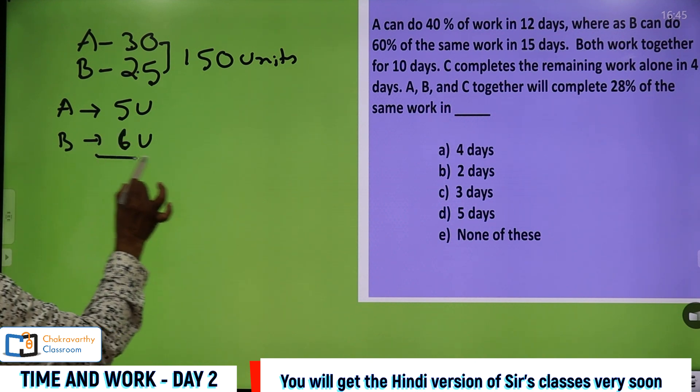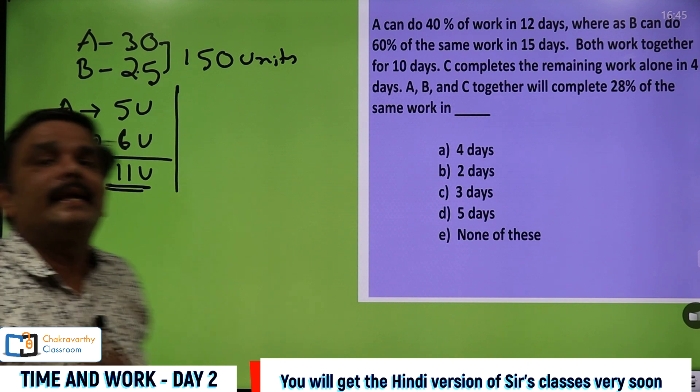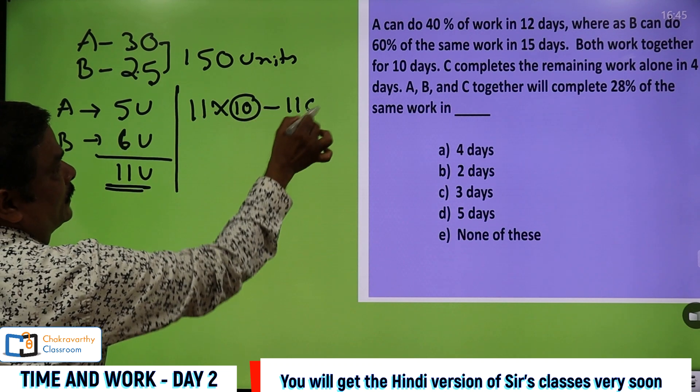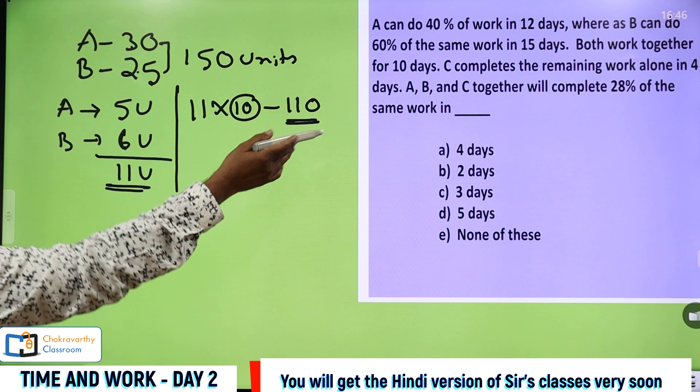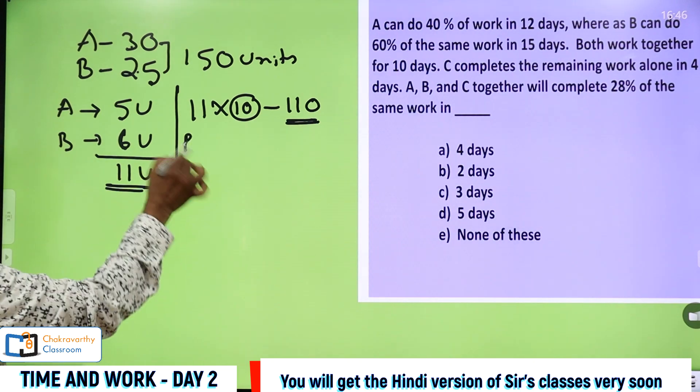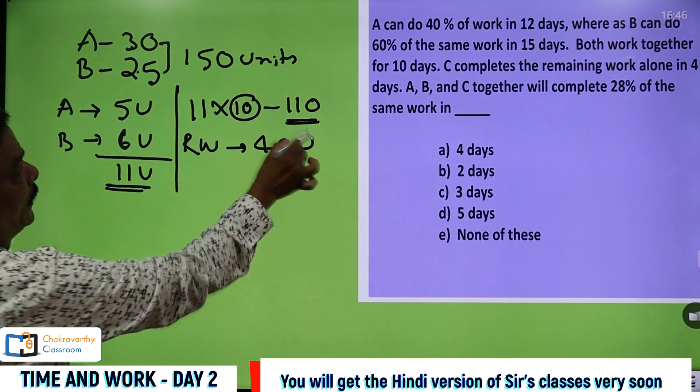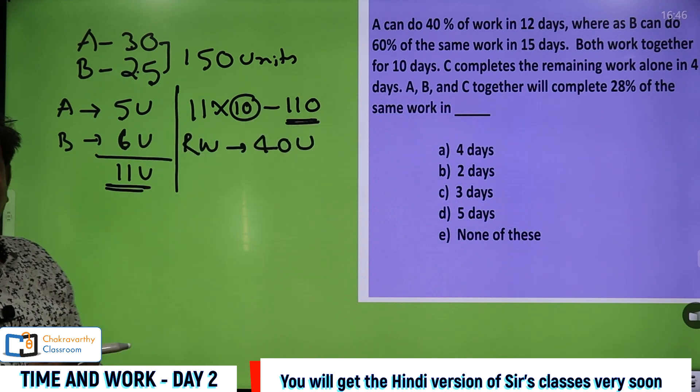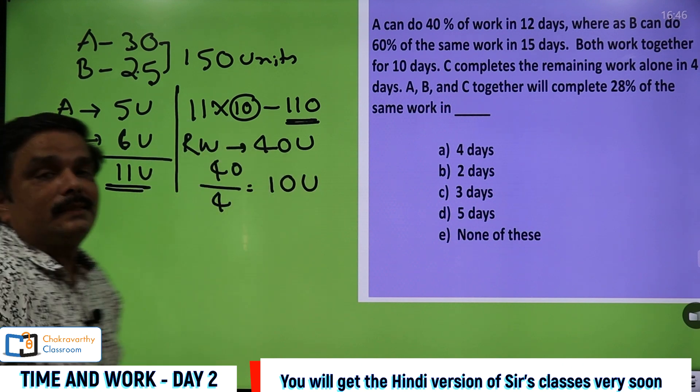The collective work of A and B is 11 units per day. Then they have given they work for 10 days. 10 days means how much work is completed? 11 units per day into 10 days, 110 units of work has been completed. Then C comes into picture. C finished the remaining work in 4 days. Remaining work is 150 minus 110, remaining work is 40 units. This 40 units have been completed by C in 4 days. You can get C's capacity - one day's capacity is 40 by 4, 10 units is C's one day's capacity.